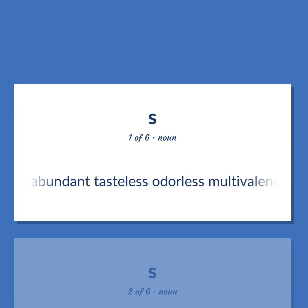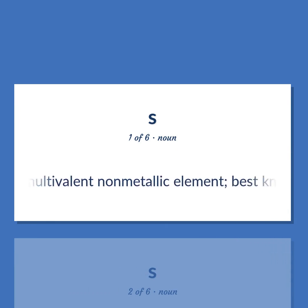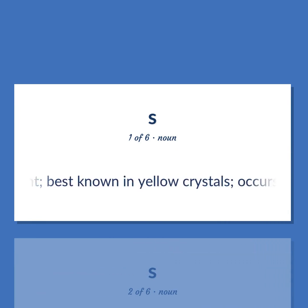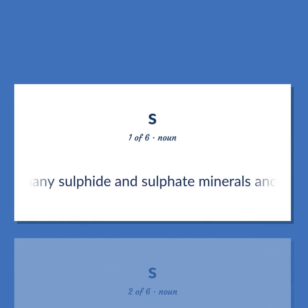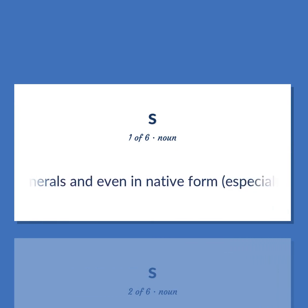An abundant, tasteless, odorless, multivalent, non-metallic element, best known in yellow crystals. It occurs in many sulfide and sulfate minerals and even in native form, especially in volcanic regions.